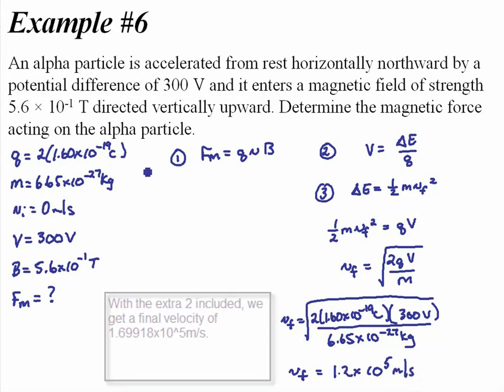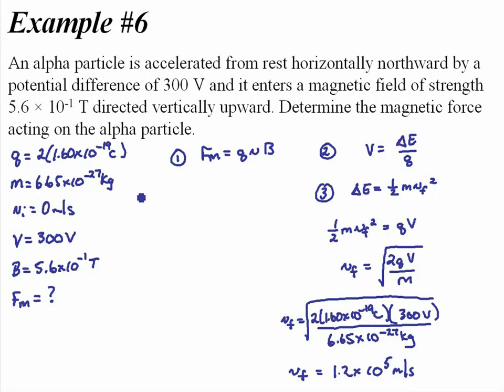Put that into equation 1, so the magnetic force equals 2 times 1.60 times 10 to the negative 19 coulombs times the velocity. I'll keep the actual value on my calculator still. So I'm going to have to write this over 2 lines times 5.6 times 10 to the negative 1 tesla.